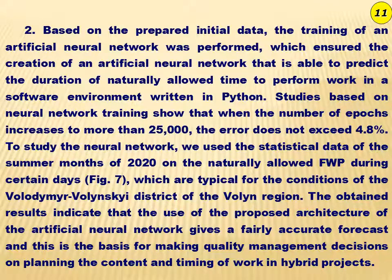Studies based on neural network training show that when the number of epochs increases to more than 25,000, the error does not exceed 4.8%. To study the neural network, statistical data of the summer months of 2020 on the naturally allowed fund for work performance during certain days, typical for the conditions of the Volodymyr-Volensky district of the Volodymyr region, were used. The obtained results indicate that the use of the proposed architecture of the artificial neural network gives a fairly accurate forecast and provides a basis for making quality management decisions regarding planning the content and timing of work in hybrid projects.